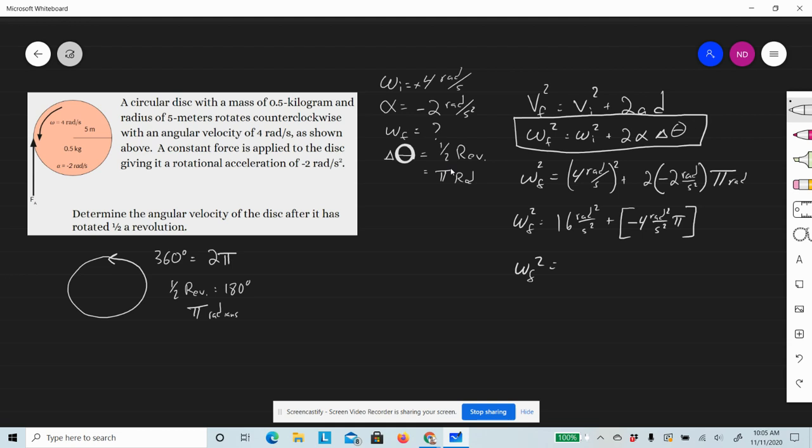So we get 16 radians squared per second squared minus 12.566 radians squared per second squared. 16 minus that gives us 3.434 radians squared per second squared.